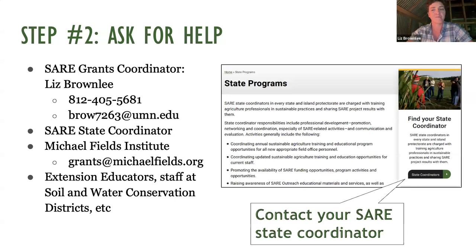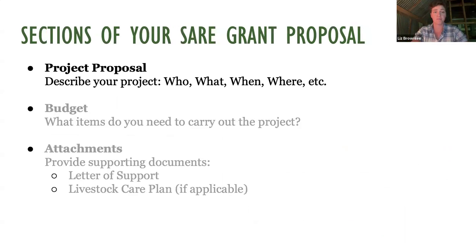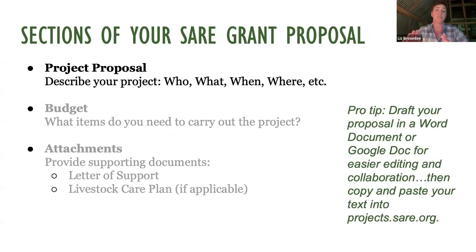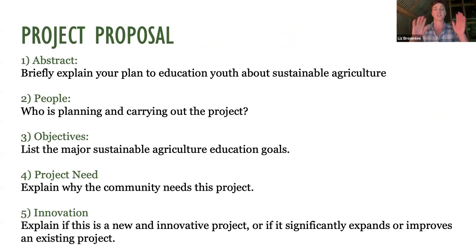Step three of four: develop your actual proposal. The proposal really has three parts: the narrative section - who, what, when, where, how, why - the budget, and a couple of attachments. We're going to walk through all three. A pro tip: when drafting the narrative part, draft it in Word or Google Docs or whatever word processor you use to make it easy to edit and have others review it - then copy and paste your final answers into projects.sare.org.